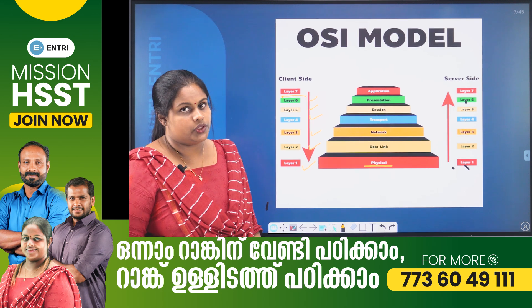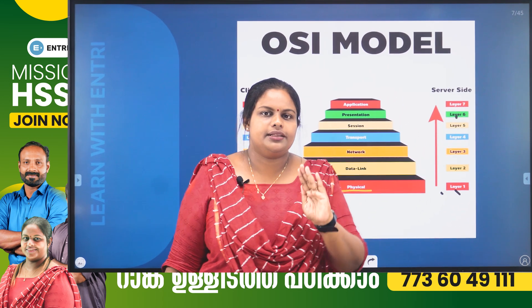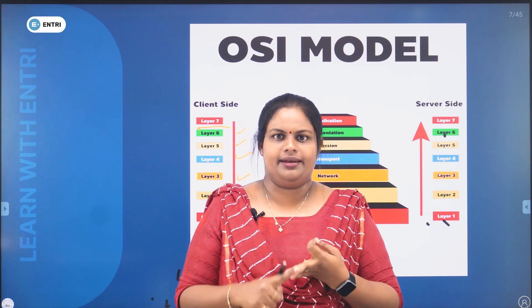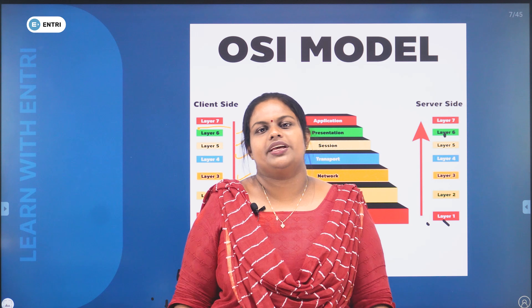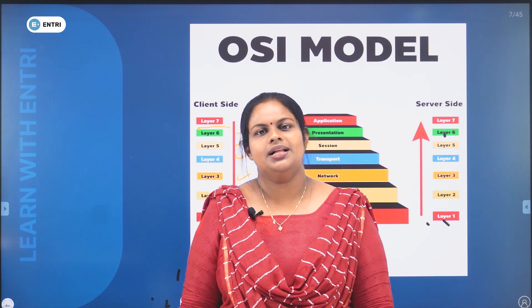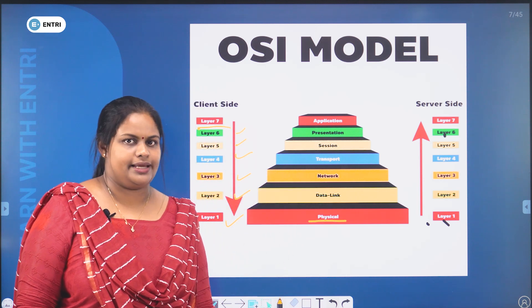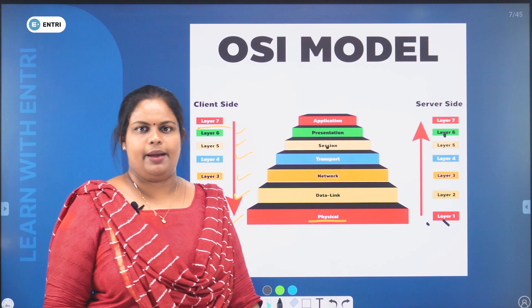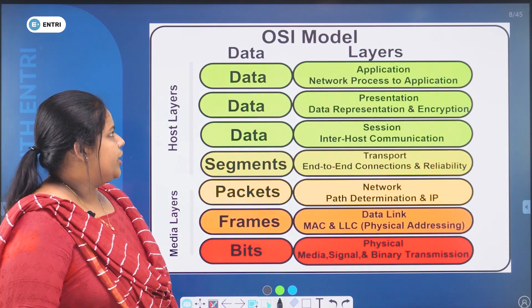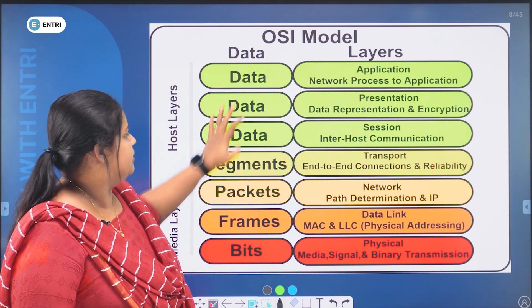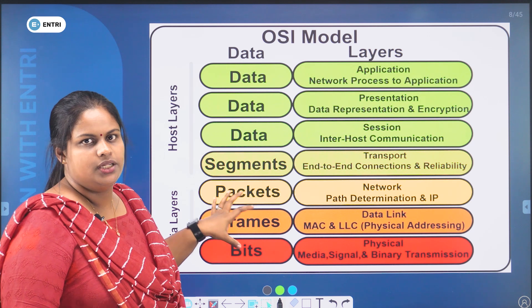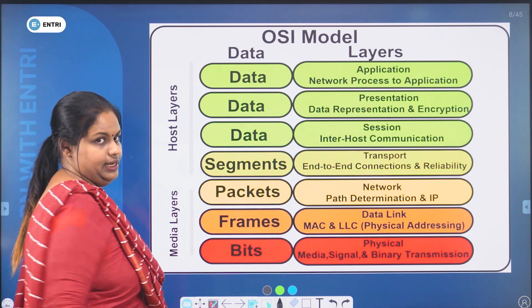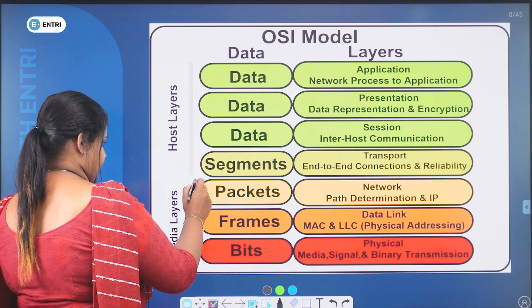A very important point is the order of the layers. For each layer, this is a basic idea of the protocols, devices, layer name, and characteristics — must know three things. The layers are: physical layer, data link, network, transport, session, presentation, and application layer.